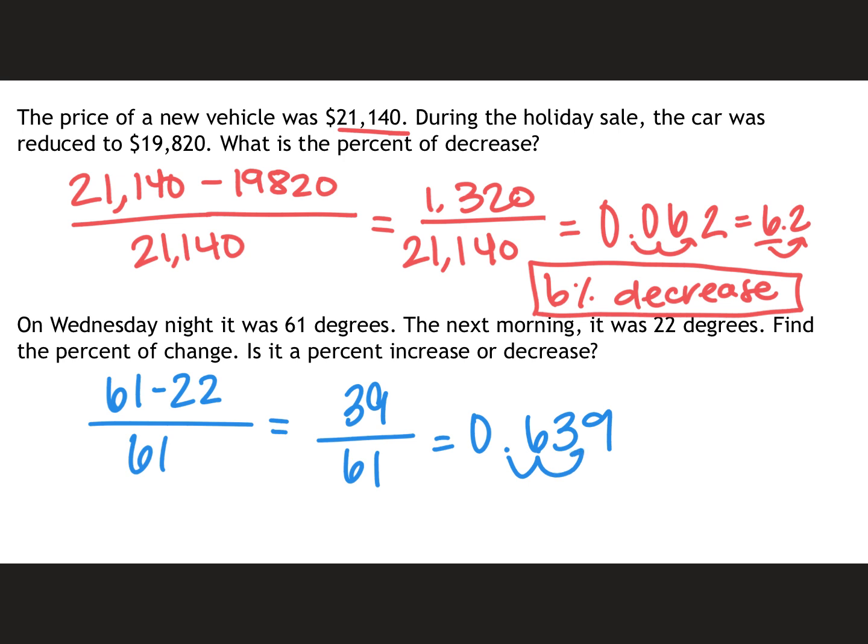Move my decimal two spots to the right. And I'm going to round to the nearest whole number or nearest percent. So the nine would make the three round up to a four. So 64%. And then is it an increase or a decrease? So we started at 61 degrees. The temperature dropped to 22. Therefore it is a decrease. It is getting colder outside. So 64% decrease for our answer.